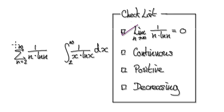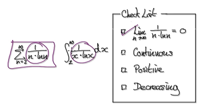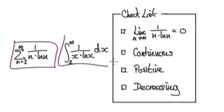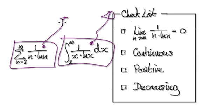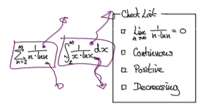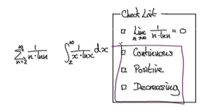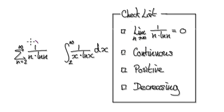Now we want to apply the theorem that says if we compare this with the integral — if the integral diverges, then the series will also diverge; if the integral converges, then the series will converge. But in order to use that theorem, we need to check three conditions first.